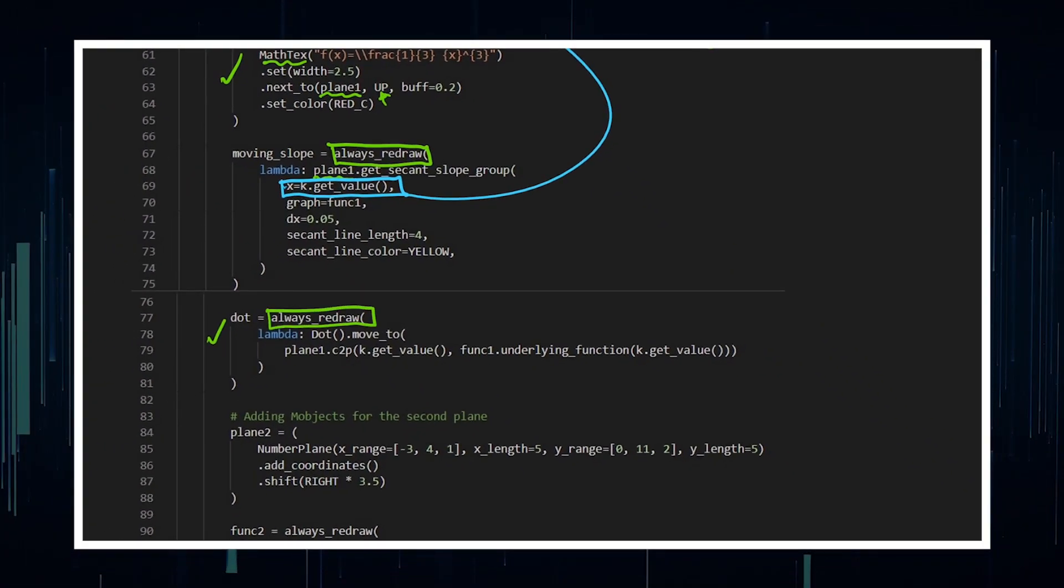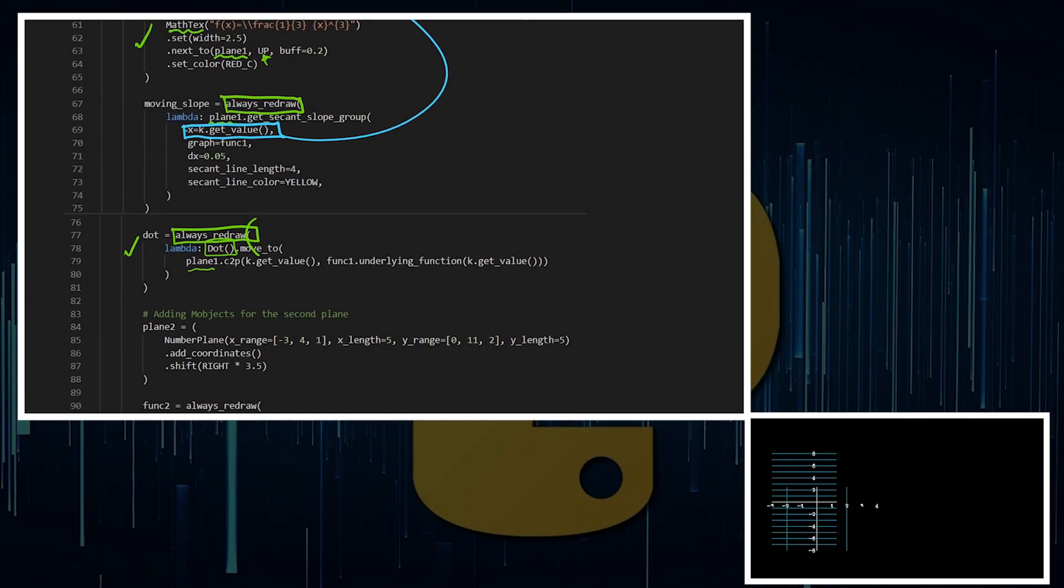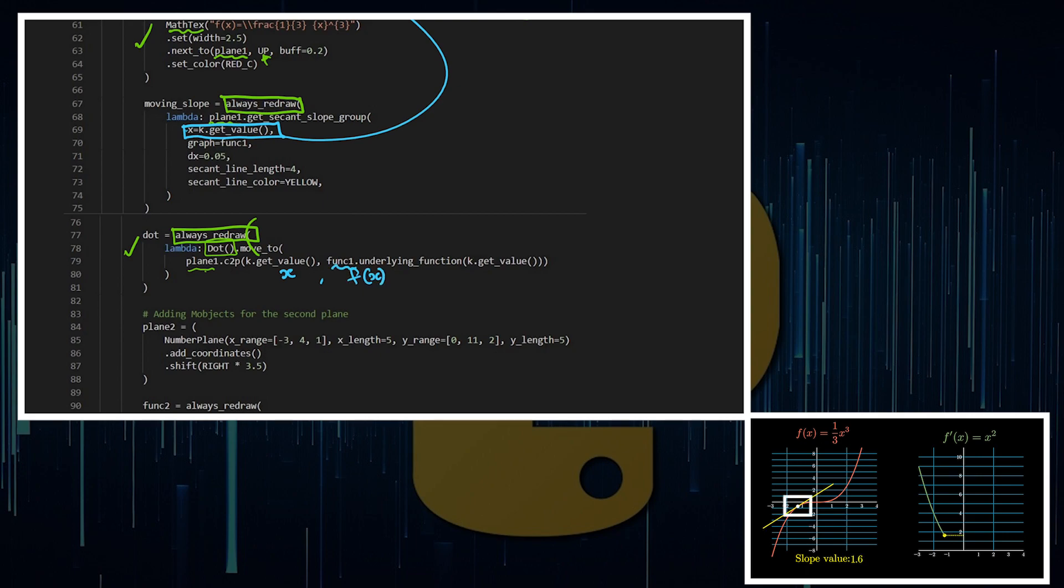I'll also be adding a dot on my function, which again, always redraw, so it's constantly going to be updating. And I want it to always track the plane coordinates to the point where this is just a dot. So dot, move to, put it on the plane, and this is again followed by my value tracker. I want it to always stay at X comma F of X on function one. So I want the dot to always stay there. That's why it's always redraw.